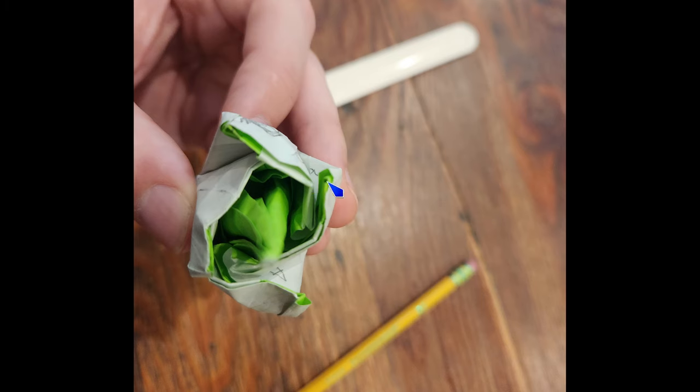For the final lock, you are just going to wrap this pinch over that ledge, wrap this pinch over that ledge, this pinch over that ledge, that pinch over that ledge. So you're just locking it down, wrapping it into itself around the handle.